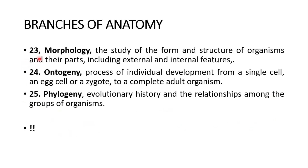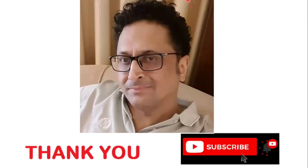This is the last slide of today's topic. Morphology is the study of the form and structure of organisms and their parts, including external and internal features. Finally, ontogeny and phylogeny: ontogeny is the process of individual development from a single cell — an egg cell or zygote — to a complete adult organism. Phylogeny is the evolutionary history and relationships among groups of organisms. Thank you very much for watching. Very soon I will complete all topics of general anatomy — please subscribe to my channel. Thank you and goodbye.